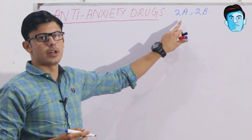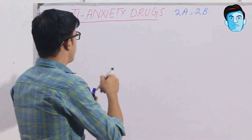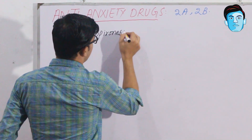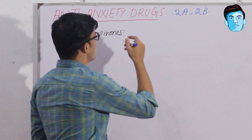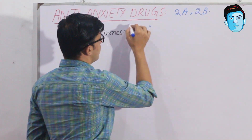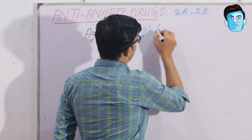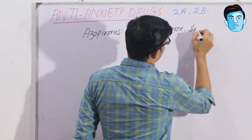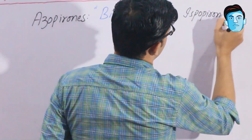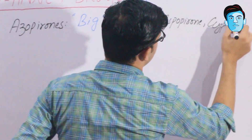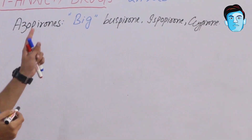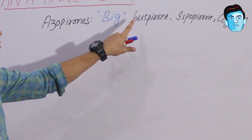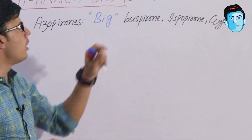The first A stands for azapirones. In this class we have a trick — BIG — where B stands for buspirone, and the group includes buspirone, gepirone, and a related drug. These are the three important drugs in the azapirone class.